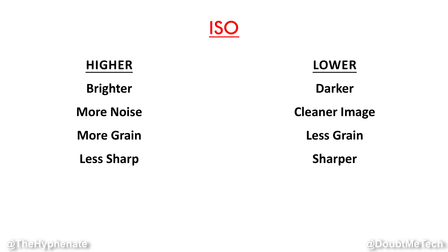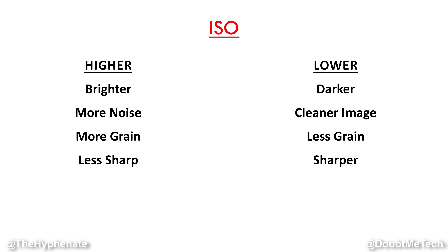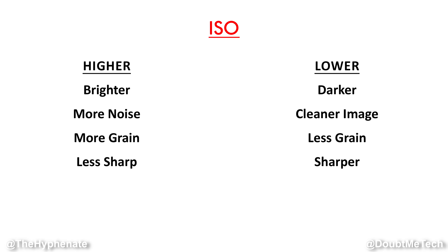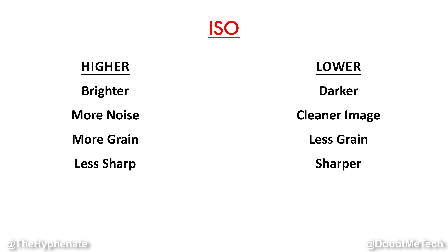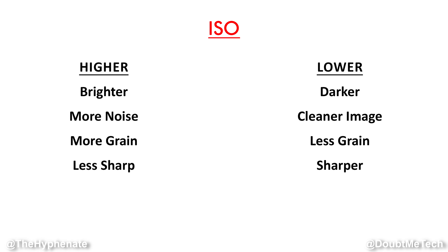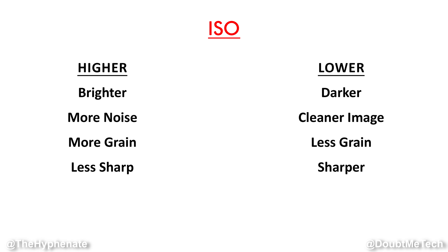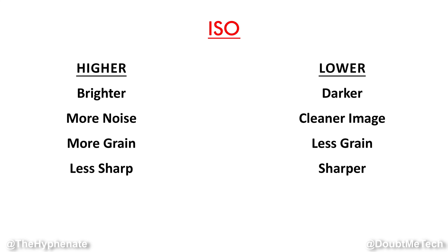Lastly, we have ISO. This adjusts your sensor's sensitivity to light — the higher you bring up your ISO, the more light; the lower the ISO, the darker the image. However, there are trade-offs: the higher you go in ISO, the more noise you get — more grain and less sharpness. The lower your ISO, the cleaner the image, less grain, less noise, and sharper.